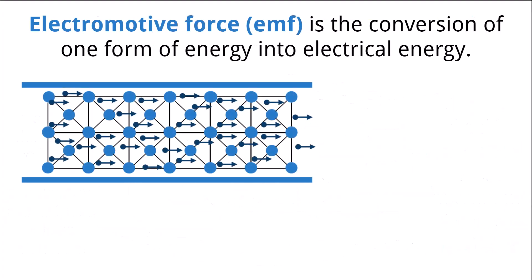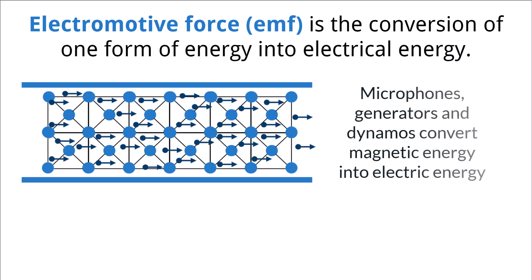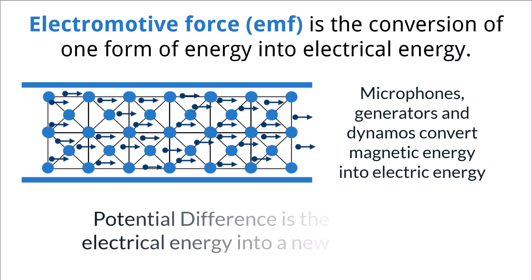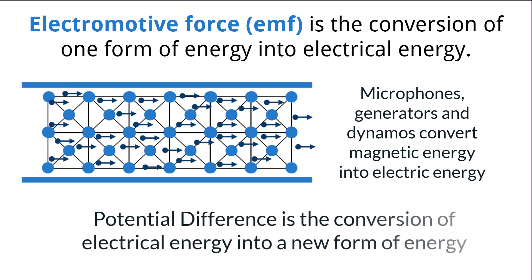The electromotive force describes the conversion of one form of energy into another. Specifically, this is seen in devices that convert electrical energy — examples include the conversion of magnetic energy to electrical energy in devices like microphones, generators, and dynamos. A second term, potential difference, is used when energy is converted from electrical energy. Examples of this might include the conversion of electrical energy to light or heat energy in a lamp.